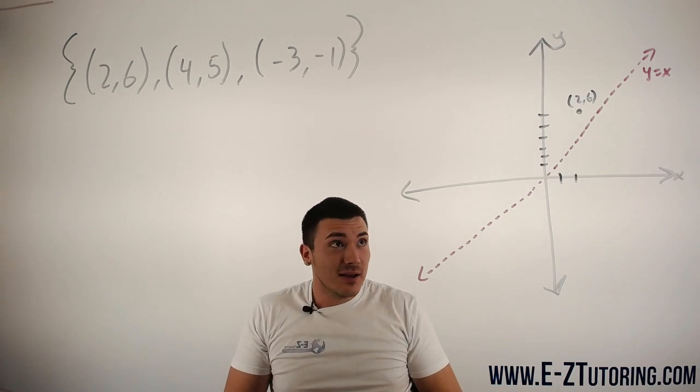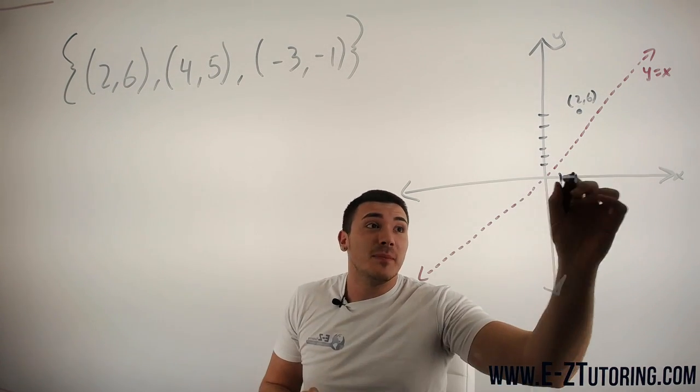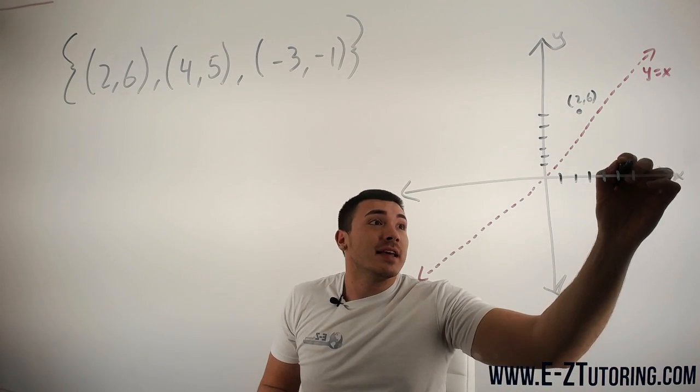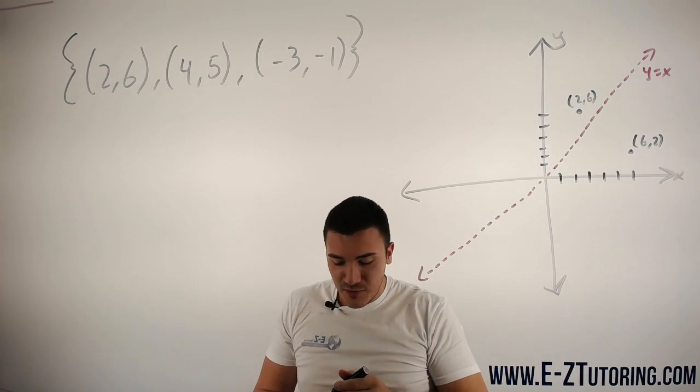If we were to reflect this across the line y equals x, then this point would become (6, 2), and you can figure this out from some of the reflection rules.